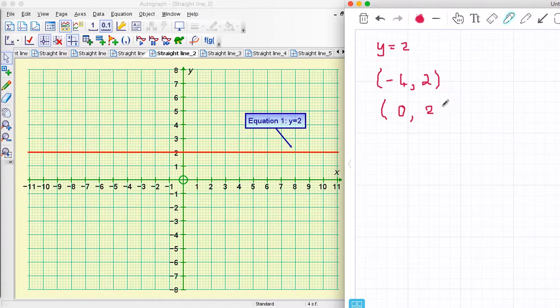0, 2; 3, 2 - it doesn't matter what my x coordinate is, y equals 2 regardless. So now I'm going to look at this and just plot minus 4, 2; 0, 2; 3, 2.